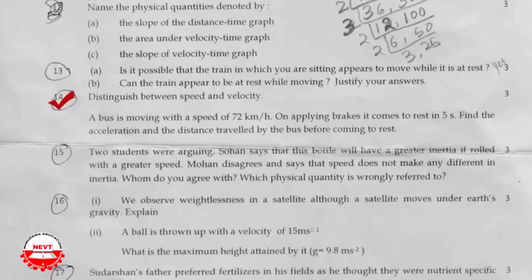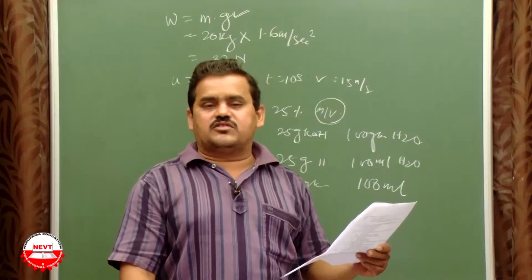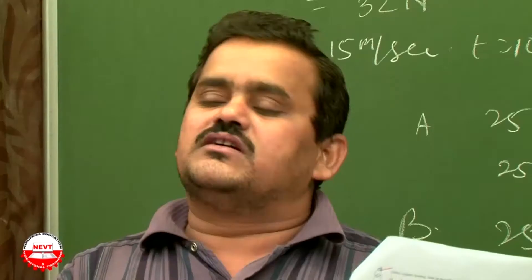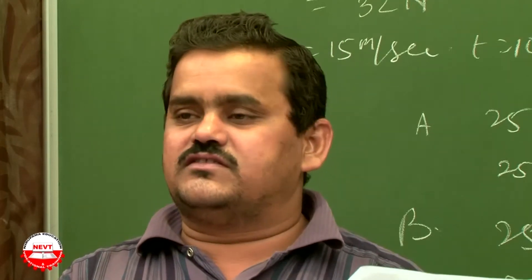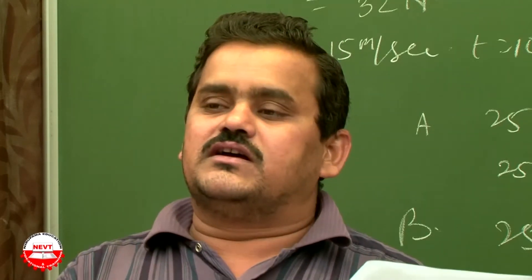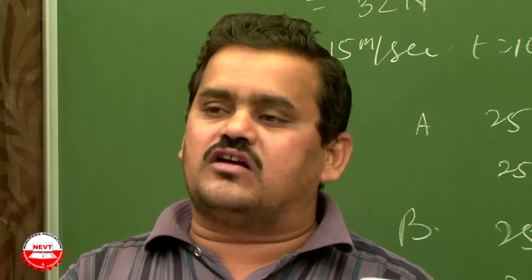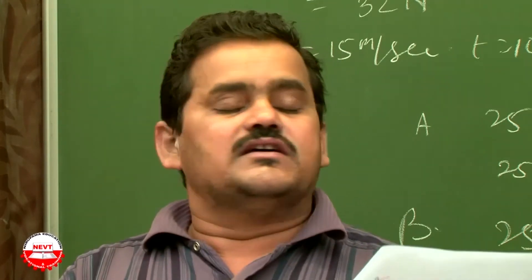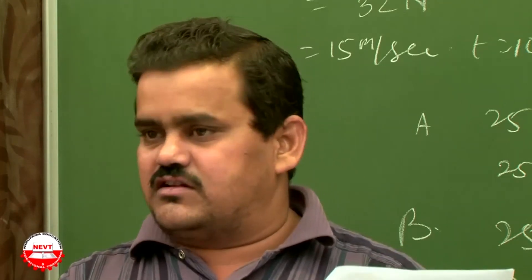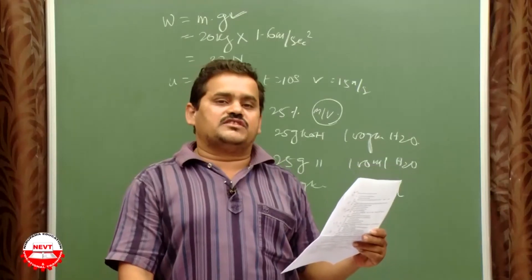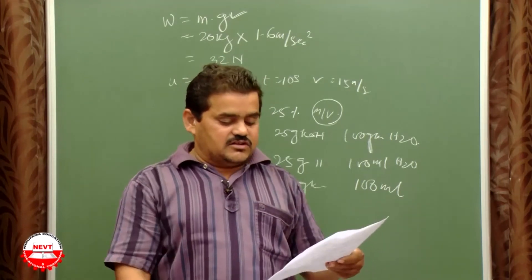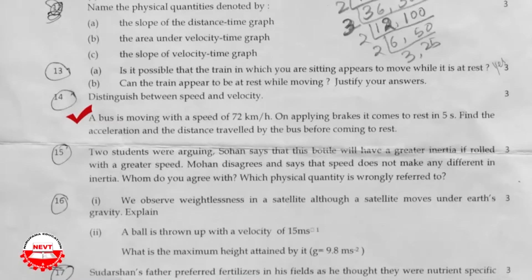Question number fourteen: Distinguish between speed and velocity. Speed is the rate of change of distance; velocity is the rate of change of displacement. Speed is a scalar; velocity is a vector. Speed = distance/time; velocity = displacement/time.